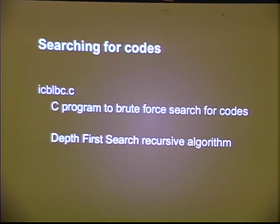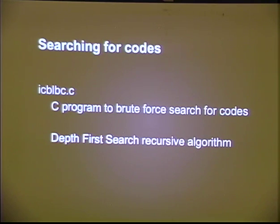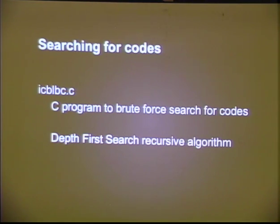The C code and the Python version use a depth-first search for codes consisting of code words, given the parameters we provide at the beginning. We say we want a 7,4,3 code or something along those lines, and we generate longer and longer codes, running through all the brute force candidate values and eliminating the ones that don't match the appropriate Hamming distance. This is not particularly efficient, but it lets us find codes that you wouldn't derive from an analytical method — and properties we may not have found in other ways.